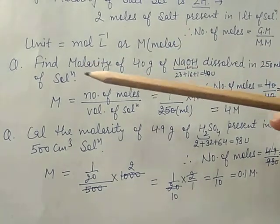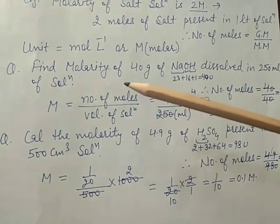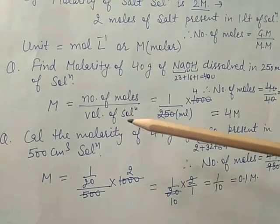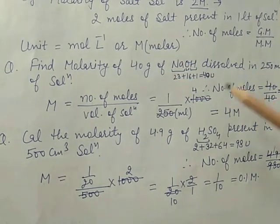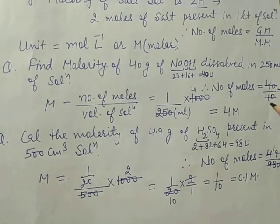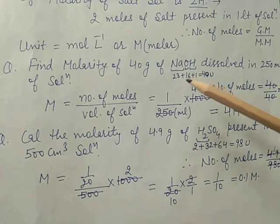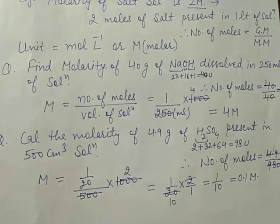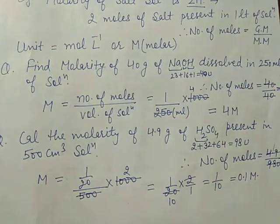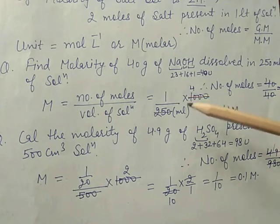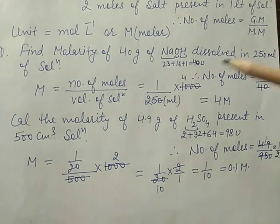Find the molarity of 40 gram of NaOH dissolved in 250 ml of solution. Molarity = number of moles divided by volume of solution in liters. Number of moles = given mass 40 divided by molar mass of NaOH (23 + 16 + 1 = 40), so moles = 1. Volume is 250 ml converted to liters by dividing by 1000. The answer is 4 molar (4M).